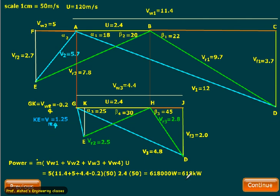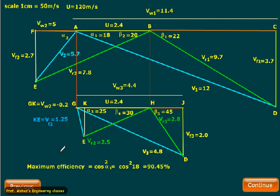As far as maximum efficiency is concerned for multi-stage, maximum efficiency is given as cos squared alpha 1, and alpha 1 is 18. So cos squared alpha 1 equals 90.45%, that is the maximum possible efficiency for two stages.